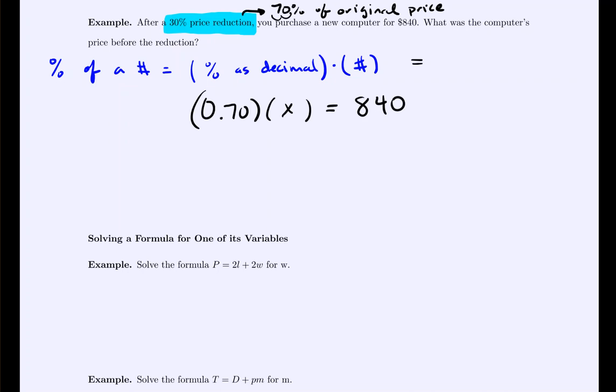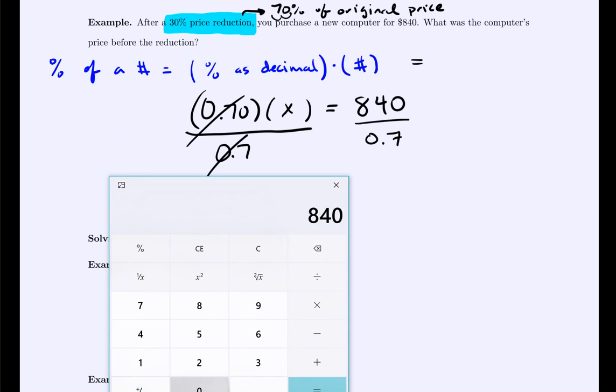Now, we want to find the original price. Currently, the original price is being multiplied by 0.7. So we could divide both sides by 0.7. And that would give us $1,200. So the original price was $1,200. And we can verify this. If we want to consider a 30% discount, we would say, what is 70% of the original price? Because a 30% discount is 70% of the original. Times $1,200. And indeed, we would get $840 as expected.